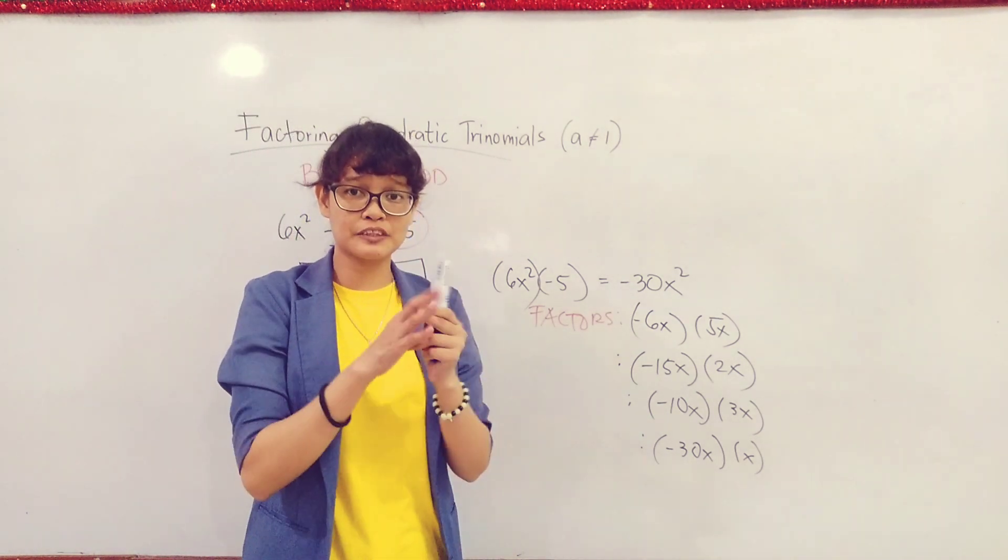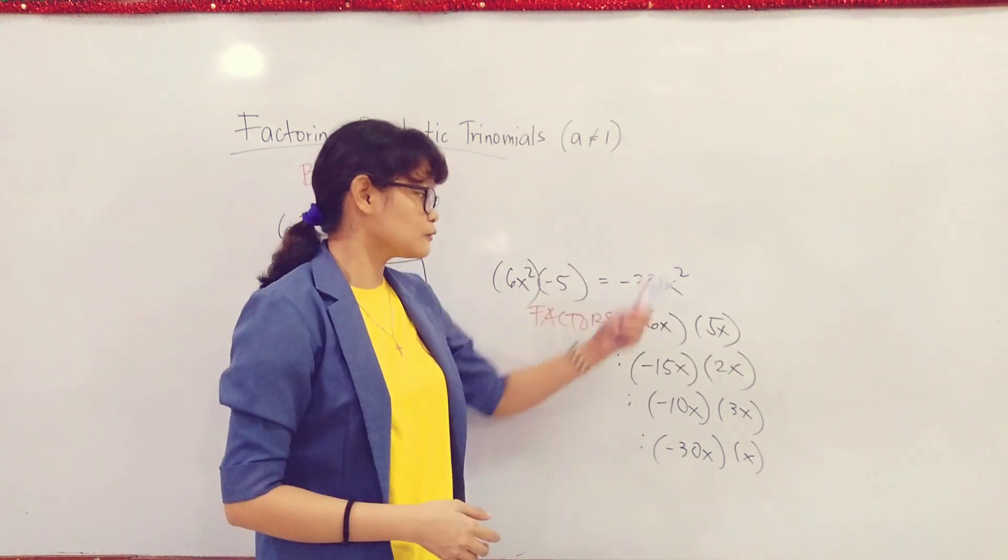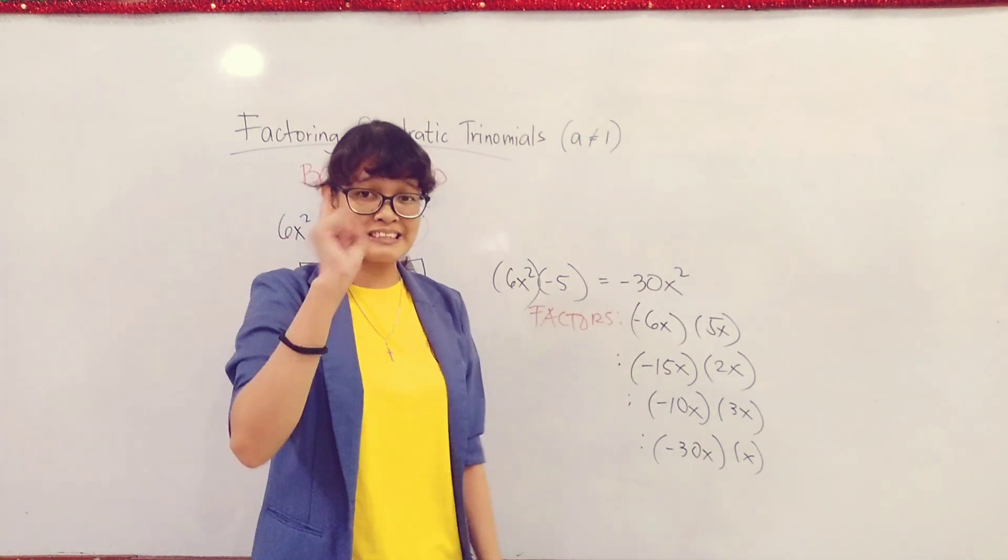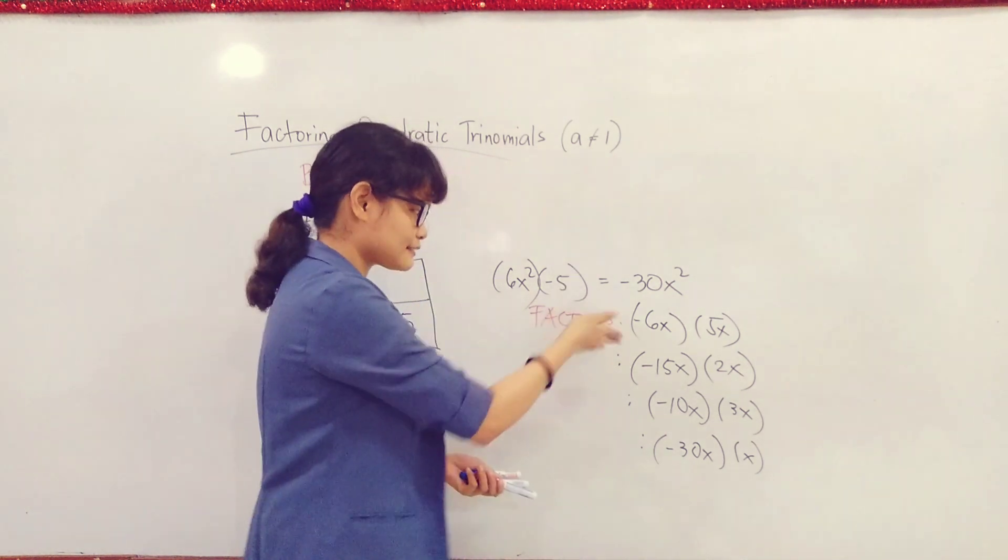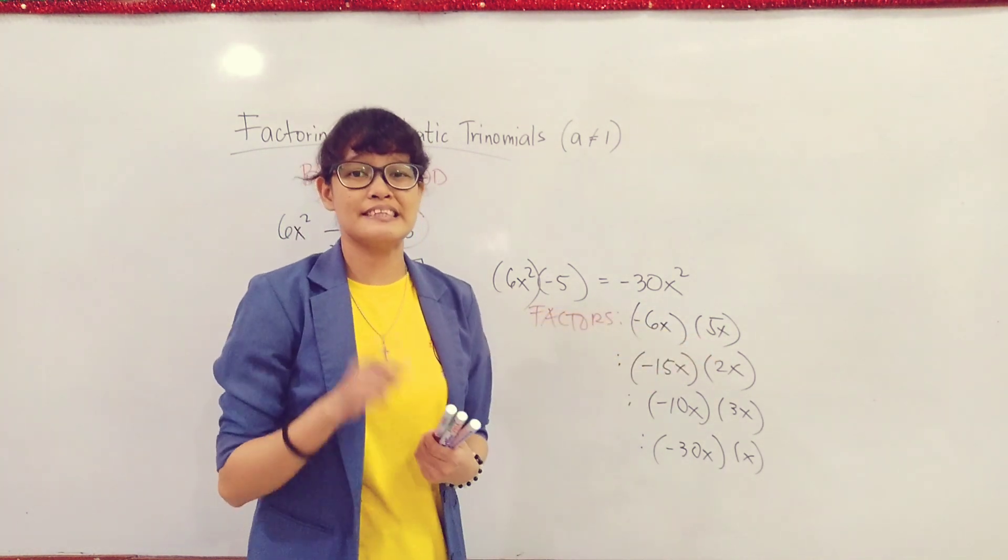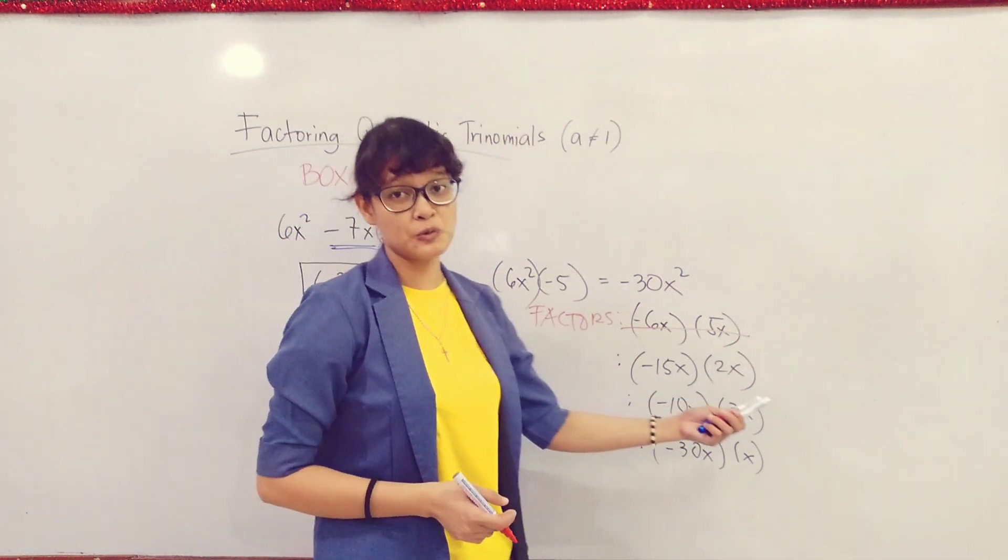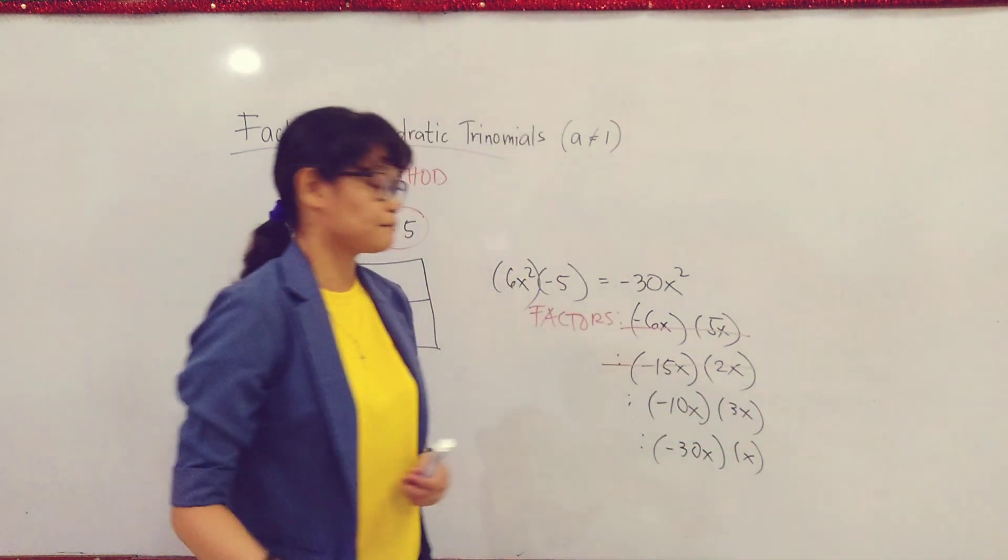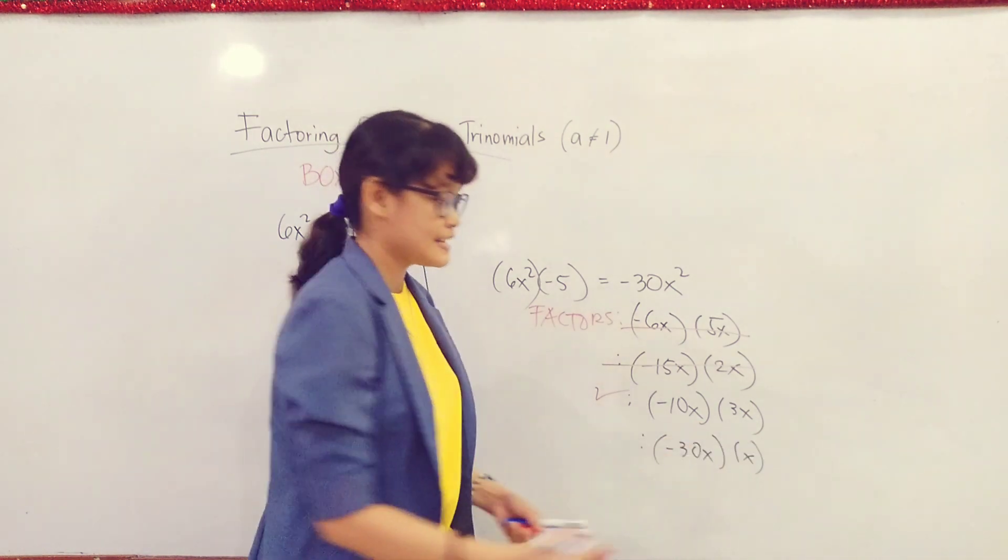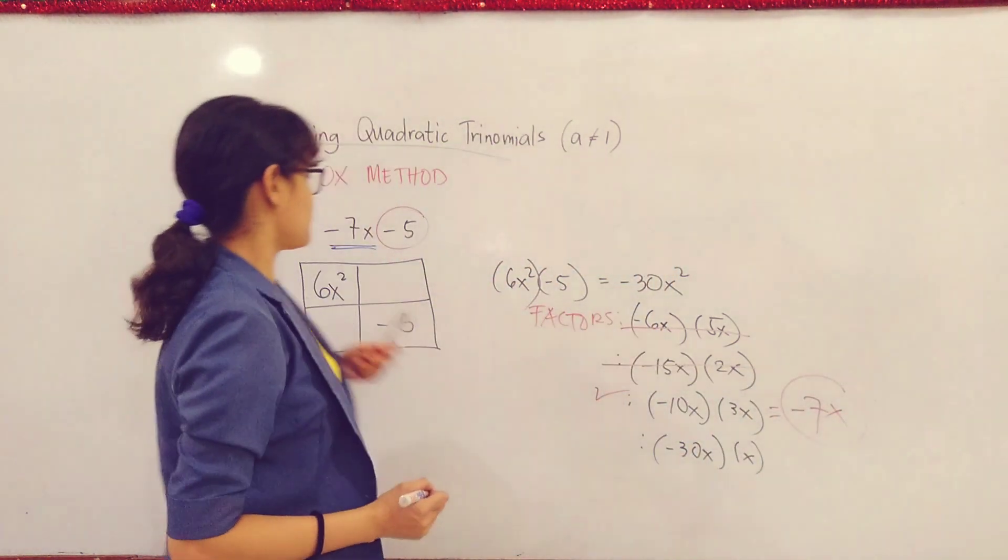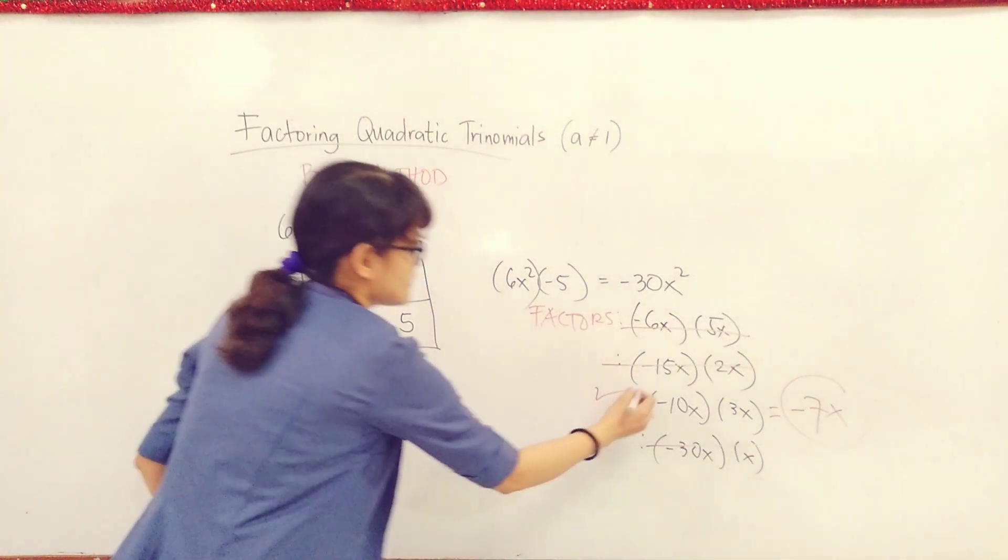Just for the sake of showing you, I want to show all the possible factors. And out of these factors, we'll only choose one. So let's start. -6x + 5x is just -x, so this is already excluded from our options. Next, -15x + 2x is -13x, so it's not included. -10x + 3x, I think we found the right factor. Because -10x + 3x will give us -7x, which is our middle term. If I continue here, -30x + x is -29x, so it's not included. So we found it.